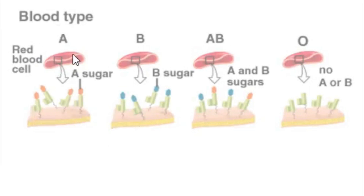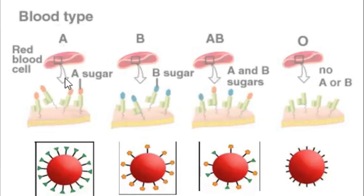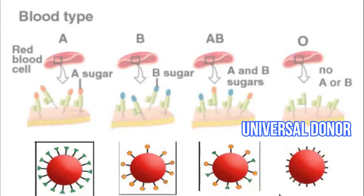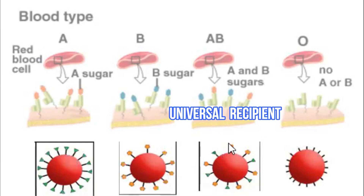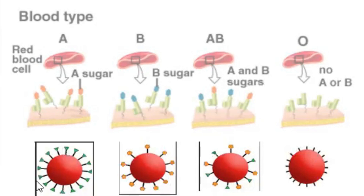Blood groups are determined by the antigens on red blood cells. Blood group A has one type of antigen, blood group B has another, blood group AB has both, and blood group O has none. Blood group O can donate to anyone because it has no recognition antigens. Blood group AB can receive from anyone because it has both antigens — it is the universal receiver.